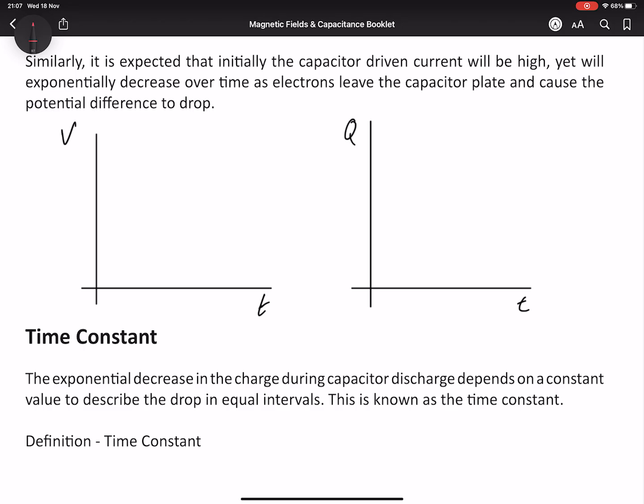The other two graphs to care about are potential difference and charge. Let's have a look first in red with the idea of discharging. We know that initially we will have our maximum potential difference as the capacitor is fully charged. As it loses charge, it loses potential difference, and that means it will gradually diminish. Naturally, the charge graph will be identical, because the charge on the plates is representative of the potential difference.